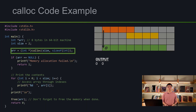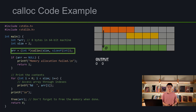Now let's talk about calloc. As mentioned, calloc is really similar to malloc — the only difference is that we initialize the blocks to zero. This code is exactly the same as the malloc example, except instead of malloc I call calloc. All the memory grid blocks, pointers, arrows, and blocks are all the same, except within the for loop it printed out zero and zero.